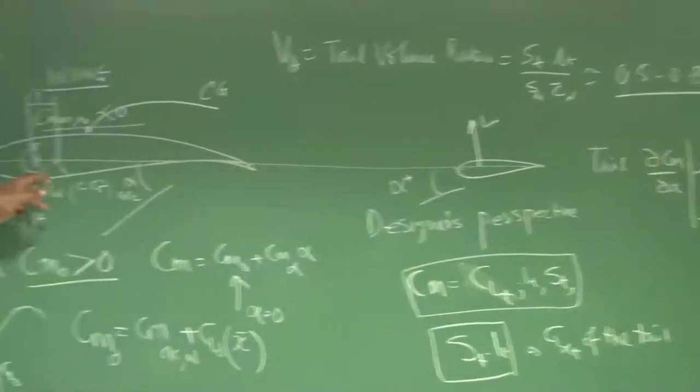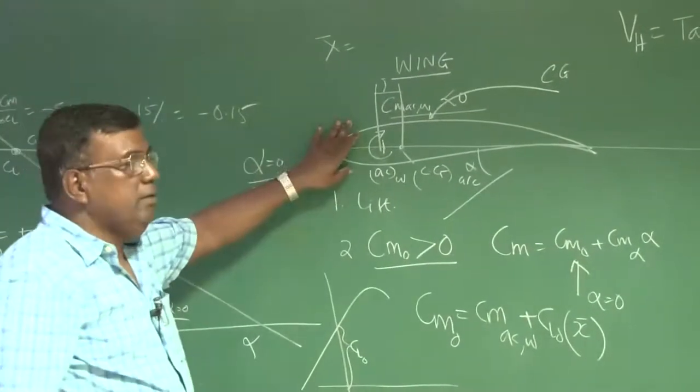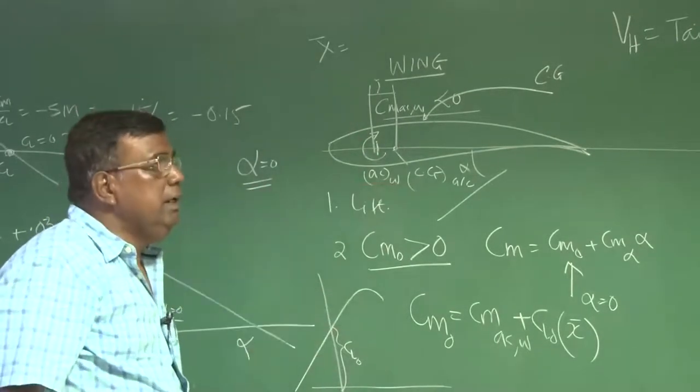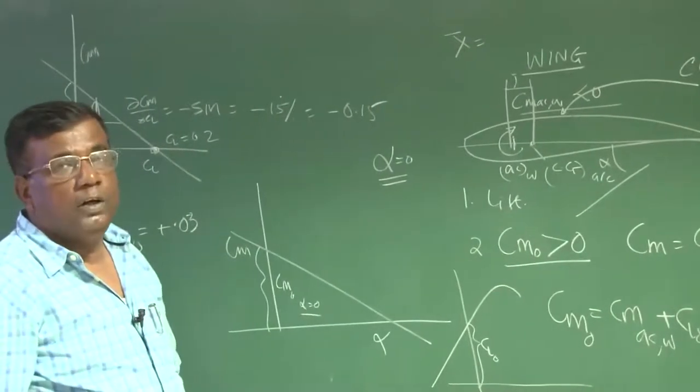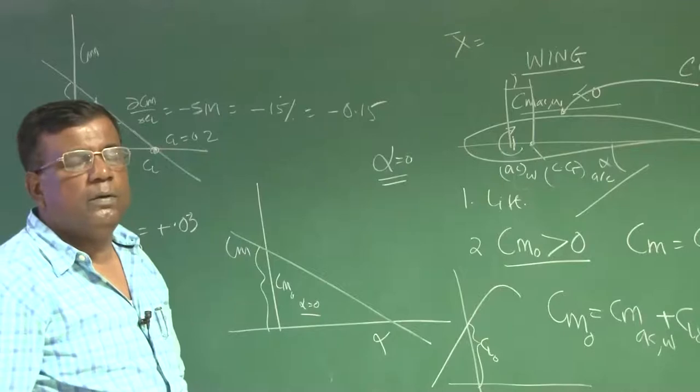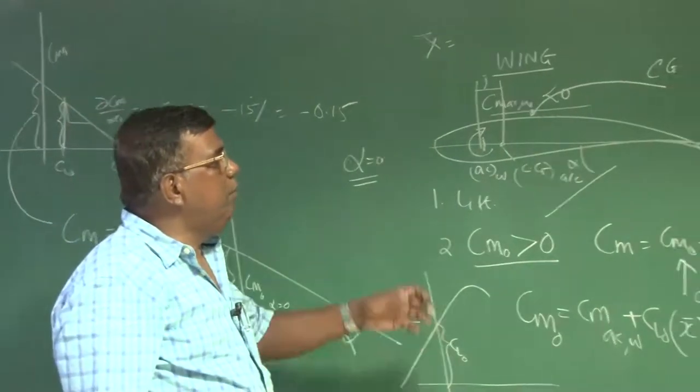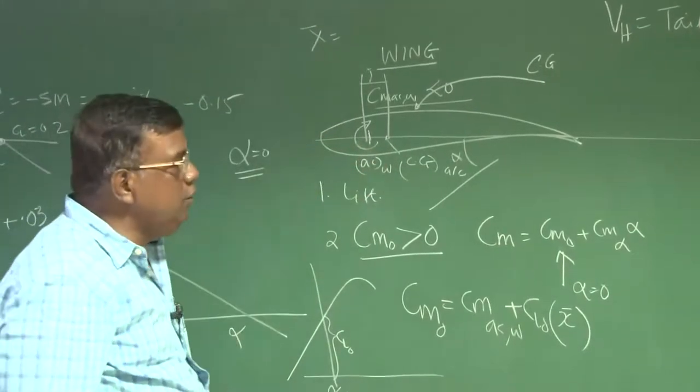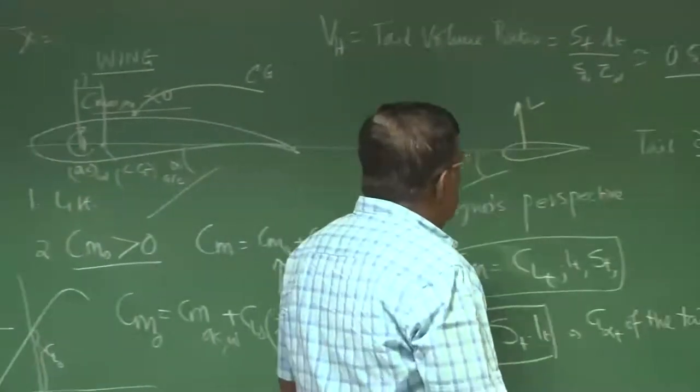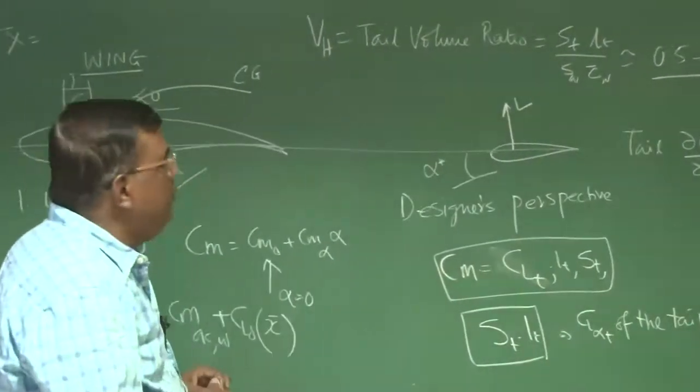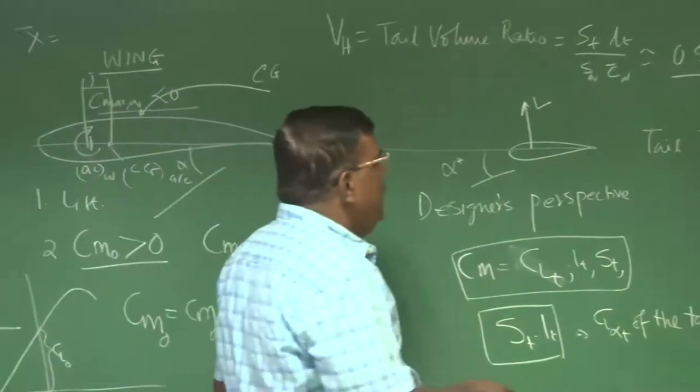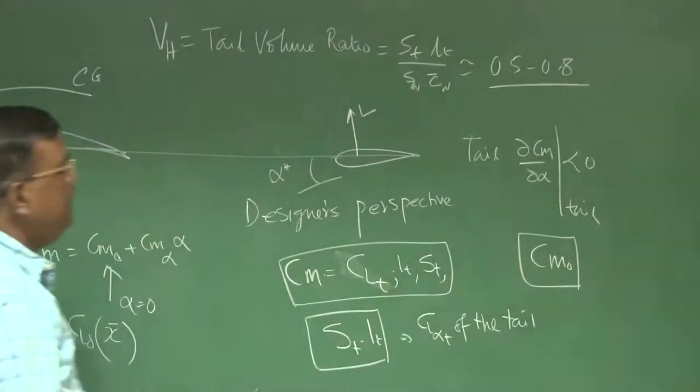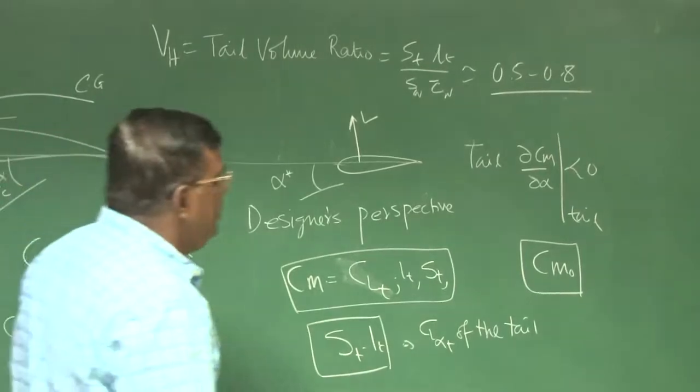Now once tail's primary job of giving stability is over, we have to also think how to extract contribution of tail in making Cm0 positive. That is also important.